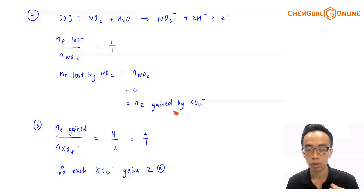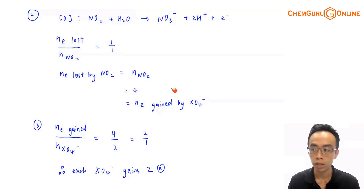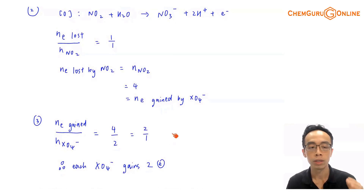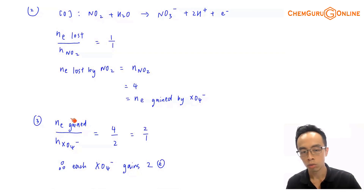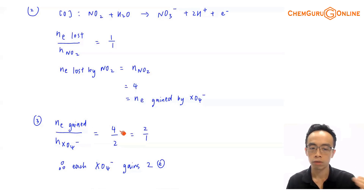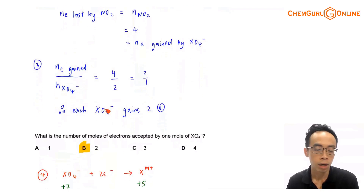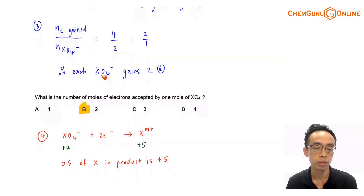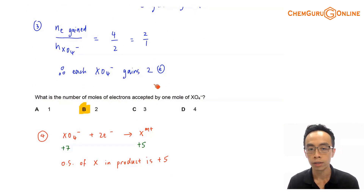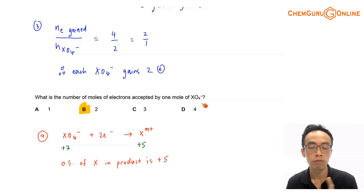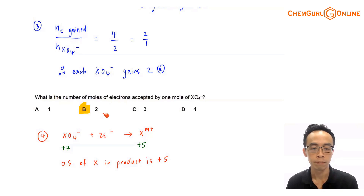Now I have the moles of electron gained by XO4⁻, which is 4. I can work out the mole ratio of electron gained to XO4⁻: 4 divided by 2 equals 2:1. This means each XO4⁻ gains 2 electrons. The question asks for the moles of electron accepted by 1 mole of XO4⁻, which is 2. The answer to this question is B.